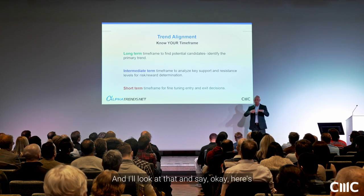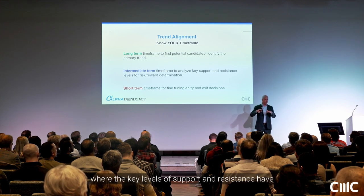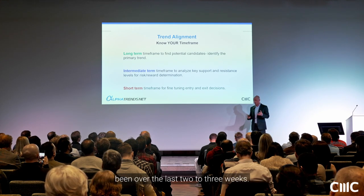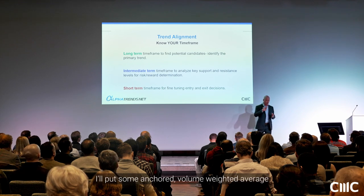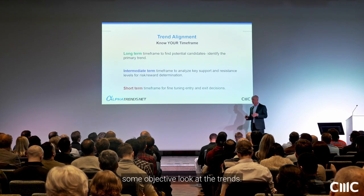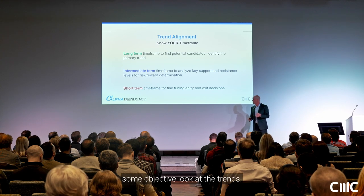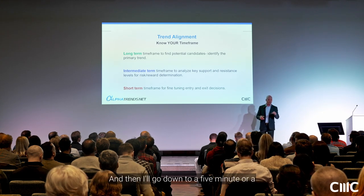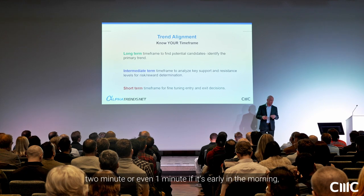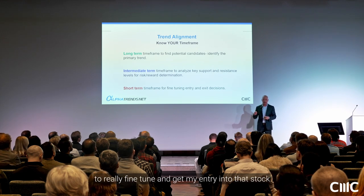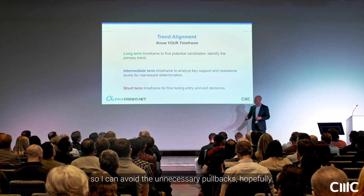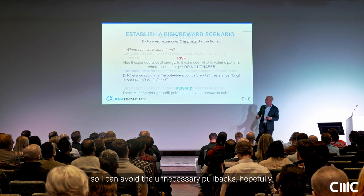I'll look at the 15 or 30-minute chart and identify the key levels of support and resistance over the last two to three weeks. I'll put some anchored volume weighted average price levels in there to give me an objective look at the trends. Then I'll go down to a five-minute, two-minute, or even one-minute chart early in the morning to really fine-tune my entry into that stock.